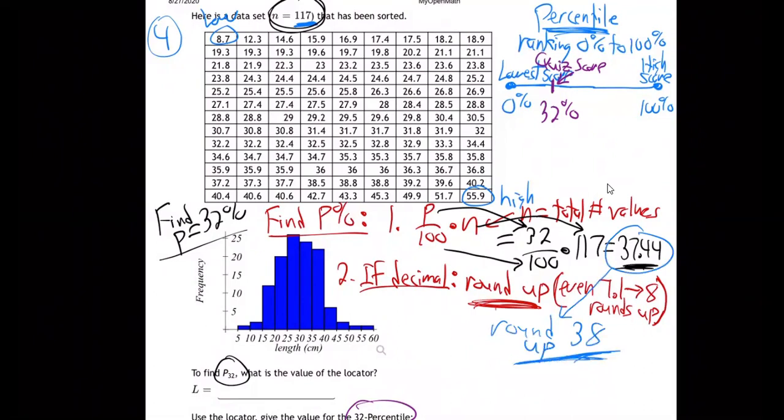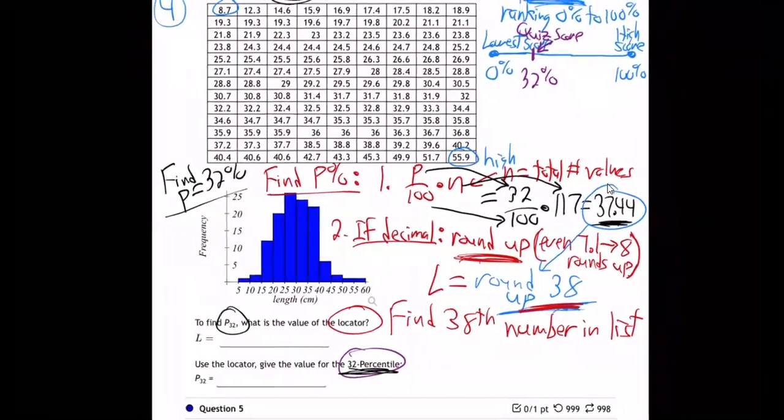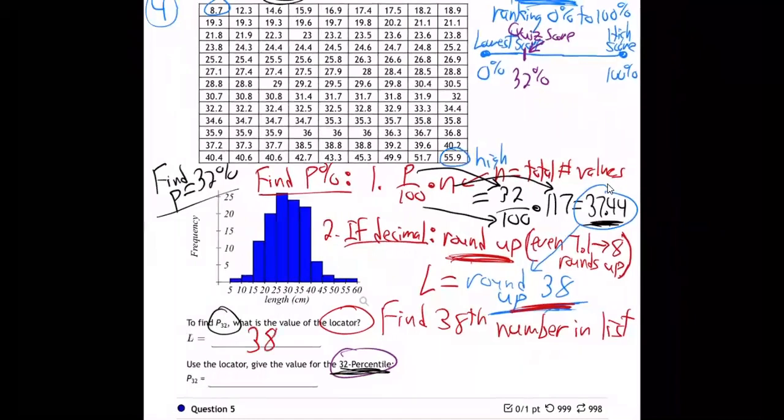Round up to 38. You tracking with me? So that's step two. If you get a decimal, round up, round it up to 38 and then go find the 38th number in the list. So that's your L. We call this L. L is 38 because L stands for locator. See how it says right here, locator. So the locator, the L is 38. That's what they're asking for in step one there. Find the L, find the locator 38.